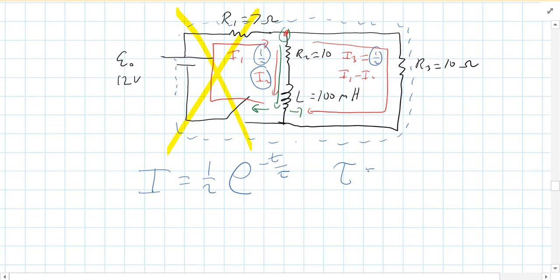So the only other thing you've got to figure out is what's tau. Well, tau is equal to L over Req. Now, remember what Req means in this case. It means what resistance does the inductor see or encounter as current goes through the inductor.